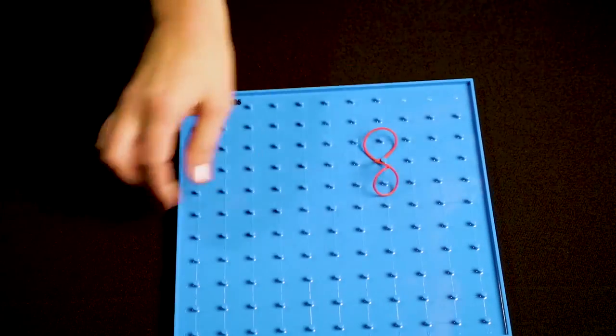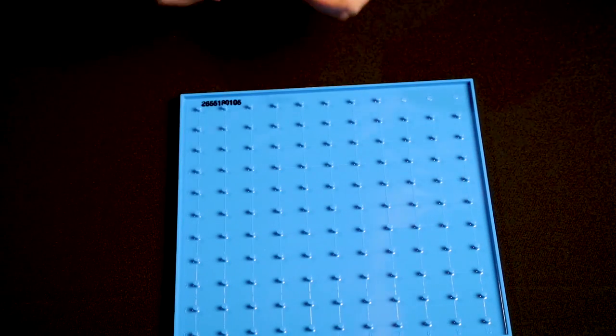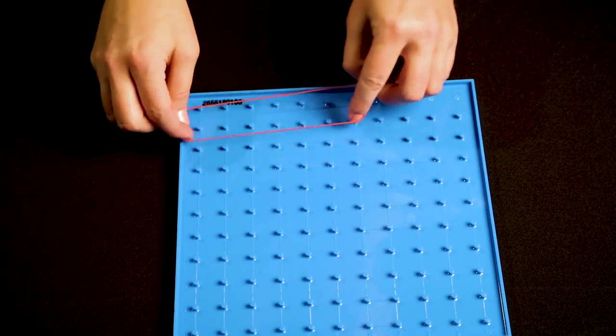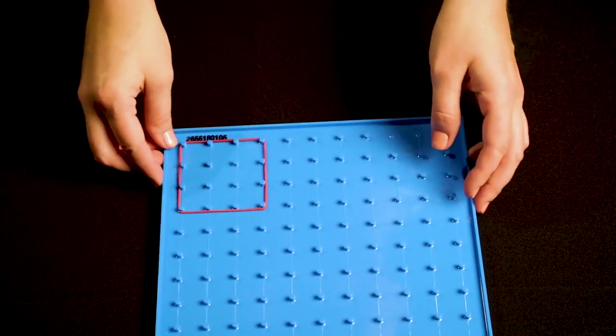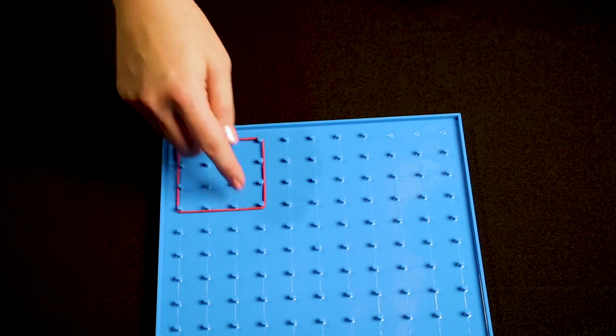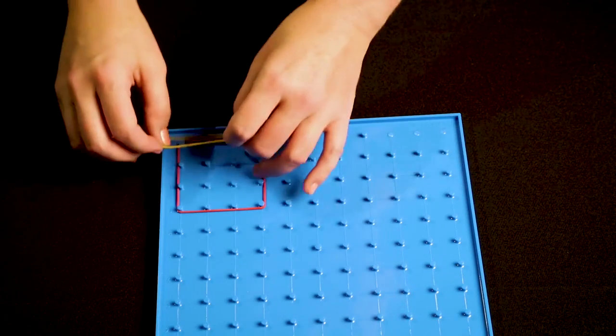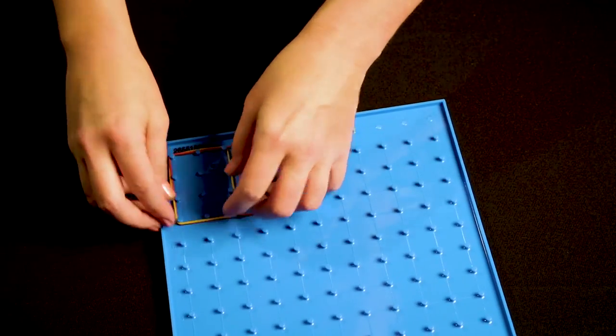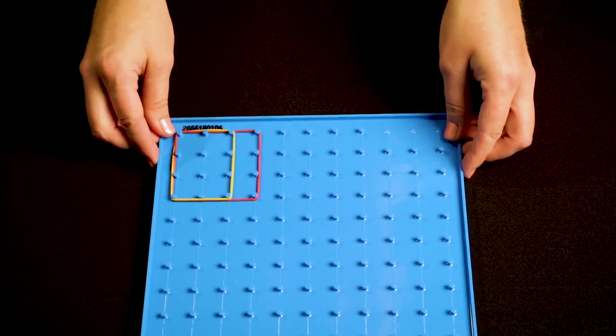We could also use something like a geoboard. So here is a geoboard and I can show the fraction two-thirds in a number of ways. First I could show the fraction two-thirds by showing an area with one, two, three equal parts and then ringing a different colored rubber band around two of those three parts.